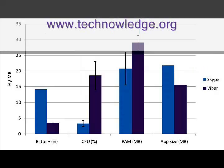The next thing to look at is phone resource usage. The battery usage on Skype is also much higher than on Viber in background idle mode. The CPU usage is lower for Skype than for Viber, and so is the RAM usage on Skype compared to Viber. As an interesting side note, the app size — which is largely irrelevant but worth noting — is somewhat bigger for Skype than for Viber.